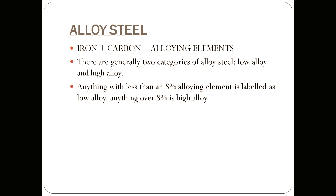Alloy steel, in one line, is nothing but iron plus carbon plus alloying elements. The only difference between carbon steel and alloy steel is the presence of those alloying elements, since iron and carbon are present in both. We add these alloying elements to further enhance and tailor the properties of the steel as per our needs.